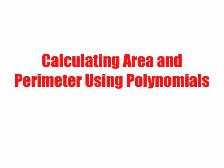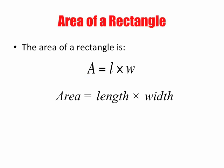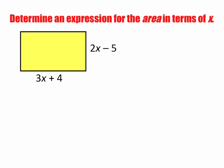Calculating area and perimeter using polynomials. Let's recall, area of a rectangle is length times width. When your question asks you to determine an expression for the area in terms of x, we have to keep in mind that the equation for area is equal to length times width. Our area is length times width. Here's our length - we find our longest side of our rectangle. And there is our width.